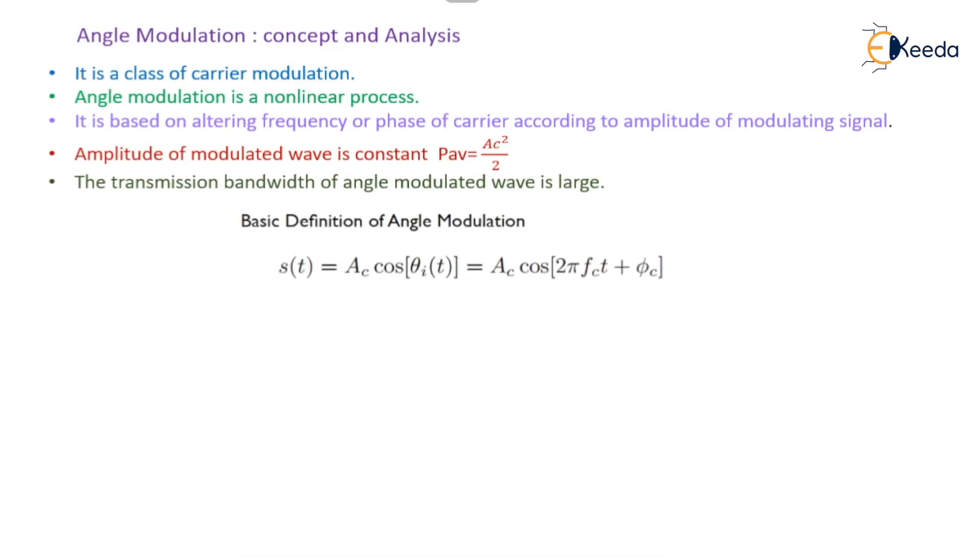Now here we will try to formulate the mathematical relation. The basic definition of angle modulation is s(t) = Ac cos[θi(t)] = Ac cos[2π fc t + φc]. Here φc is nothing but the phasor angle. The value of θi, that is the angle, is equal to 2π fc t + φc.